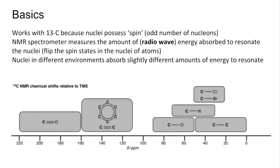The chemical shift values are on the data sheet — that's just a screenshot from the data sheet — so you can see that to resonate a carbon bonded to a chlorine it's going to be between 20 and 50 ppm, whereas a carbon double-bonded to an oxygen is between 160 and 220 ppm.